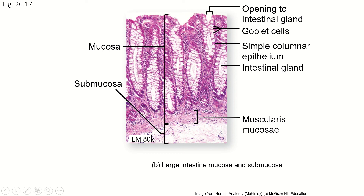Remember, the colon is doing absorption, and the fecal matter traveling through the colon is mostly waste, so we don't want that to be absorbed or to get stuck, which could cause diverticula. So there are lots of goblet cells producing mucus, and lots of columnar epithelium to absorb those last nutrients out of the organ.